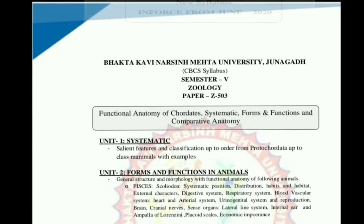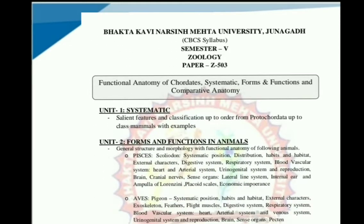You also have practical papers. Now we are going to discuss Paper No. 503. This paper is also known as Functional Anatomy of Chordates, Systematics, Forms and Functions, and Comparative Anatomy. This paper has a total of 5 units. Now we are going to discuss unit number 1, which is Systematics. In this unit, you will study the salient features and classification up to order from proto-chordates up to class Mammalia with examples.